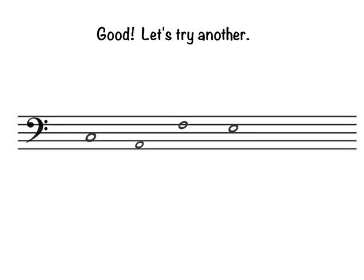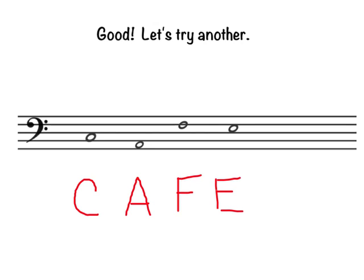Good. Let's try another. What is this word? First note is in a space: All Cows — C. Next note: All — A. This note is on a line: Good Boys Do Fine — F. This note is in a space: All Cows Eat — E. This spells CAFE.